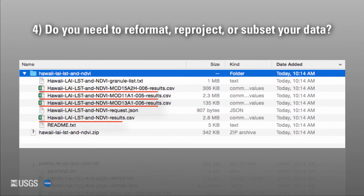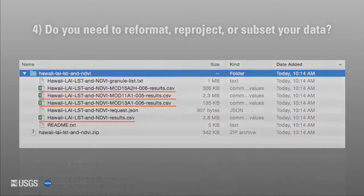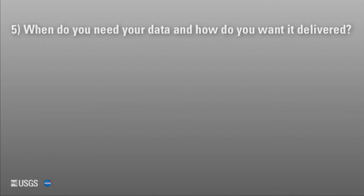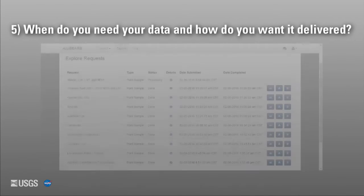Do you need to reformat, reproject, or subset your data? APPEARS provides you with a CSV file containing the extracted pixel values for your requested point locations in their native projection. It allows you to subset your data to only retrieve your pixels of interest. You cannot reformat nor reproject your data using the APPEARS application.